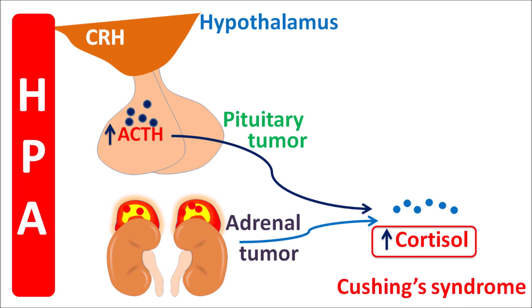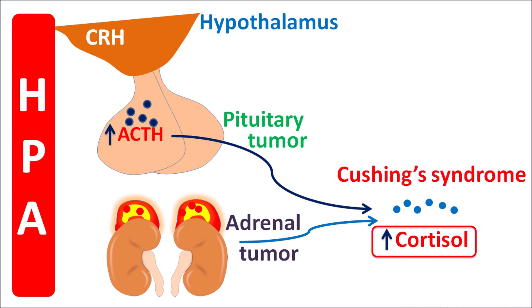Excessively raised ACTH levels may also result in elevated levels of cortisol. This is one of the main reasons for Cushing syndrome, where elevated levels of cortisol are observed because of pituitary tumors. The third reason is that any tumor other than pituitary — ectopic tumors — can also increase the secretion of ACTH, resulting in elevated levels of cortisol.